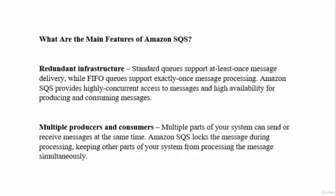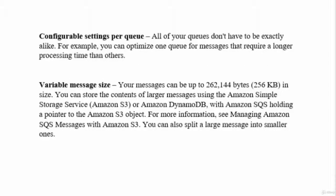Key features of Amazon SQS include redundant infrastructure: Standard queues support at-least-once message delivery while FIFO queues support exactly-once processing. SQS provides highly concurrent access to messages and high availability. Multiple producers and consumers can send and receive messages simultaneously, and SQS locks a message during processing to prevent other parts of your system from processing it at the same time. You can also use configurable settings per queue — for example, optimizing one queue for messages requiring longer processing time.